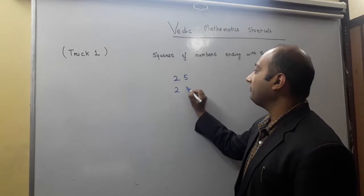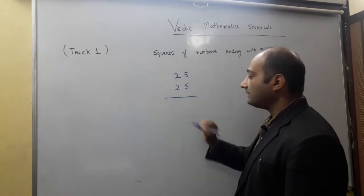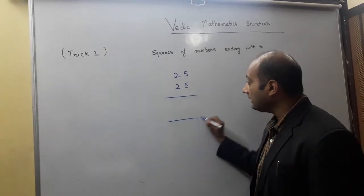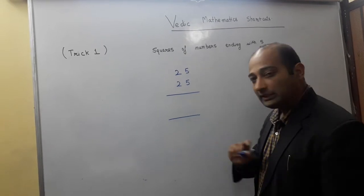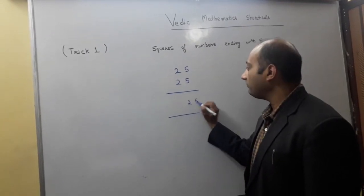For example, we have a number 25 square. If we want to evaluate this, then what do we need to do? First, multiply 5 and 5, which is 25. We write it back.